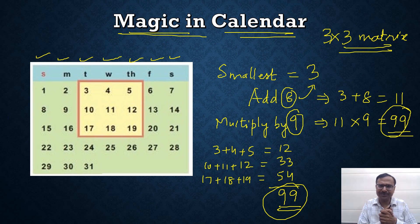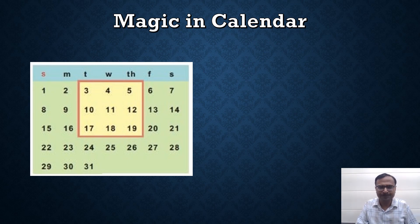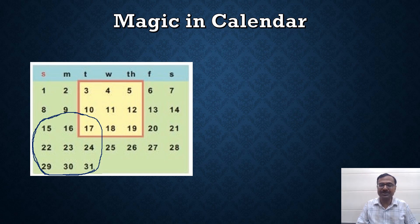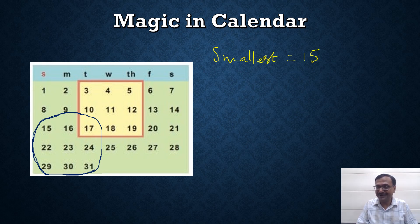Friends, that's really, really amazing! But is it universally applicable to all calendars? Let's try taking some other matrix in the same calendar. Here we have the same calendar again and now I am going to pick up some other 9 numbers — a different 3×3 matrix. The smallest number I can see is 15. I told you: add 8 to this, you get 23, and then multiply by 9. So this gives us 207.